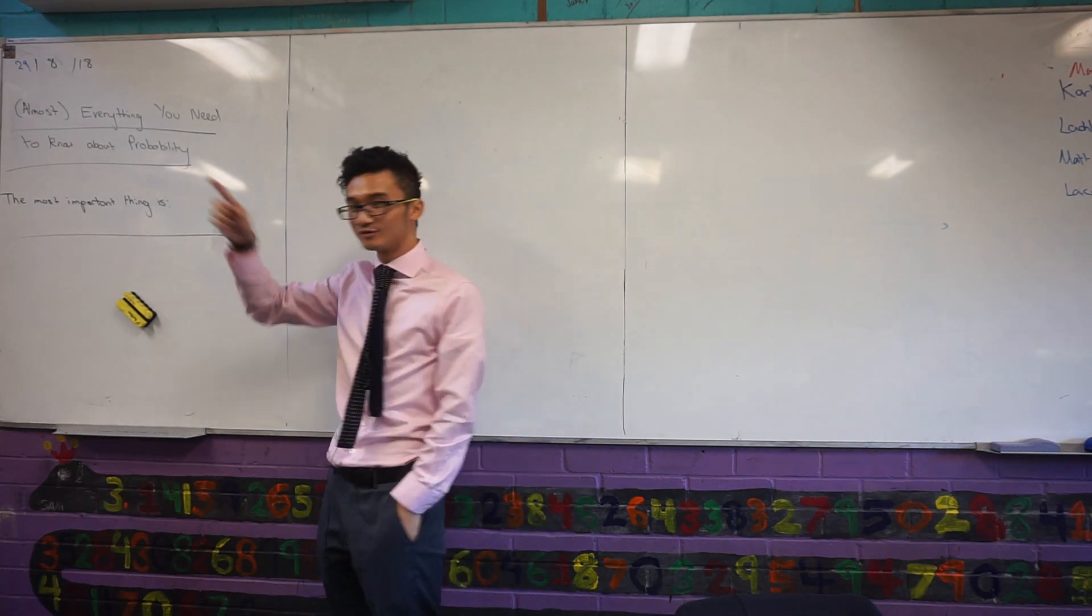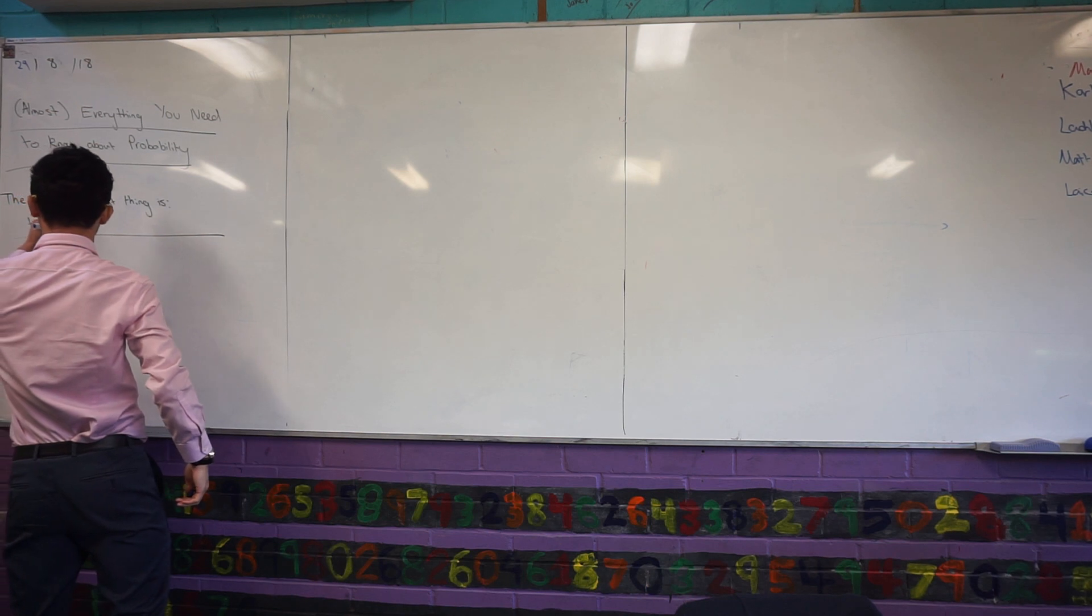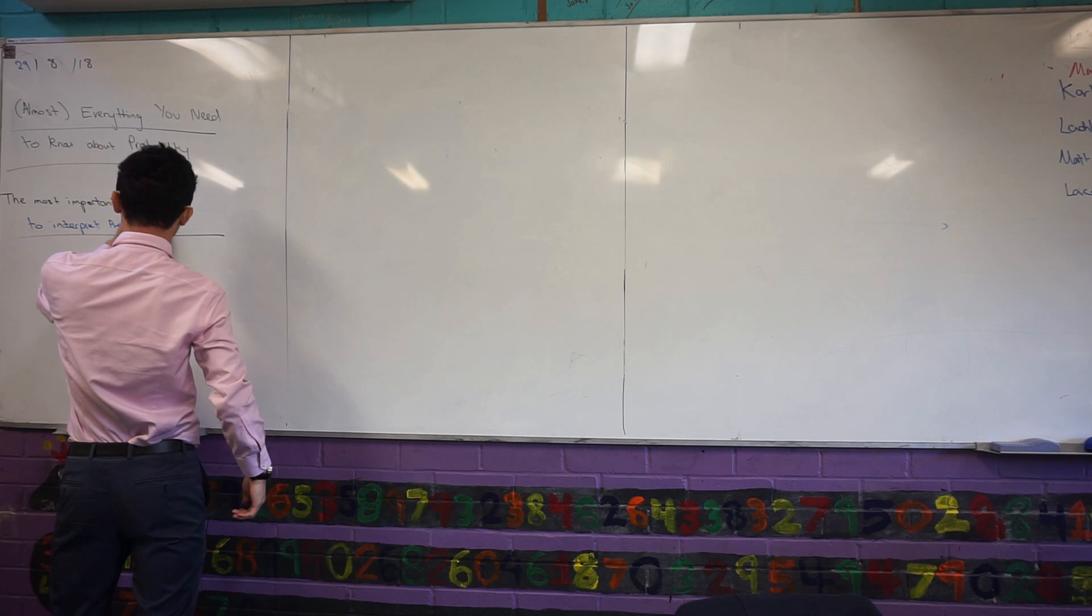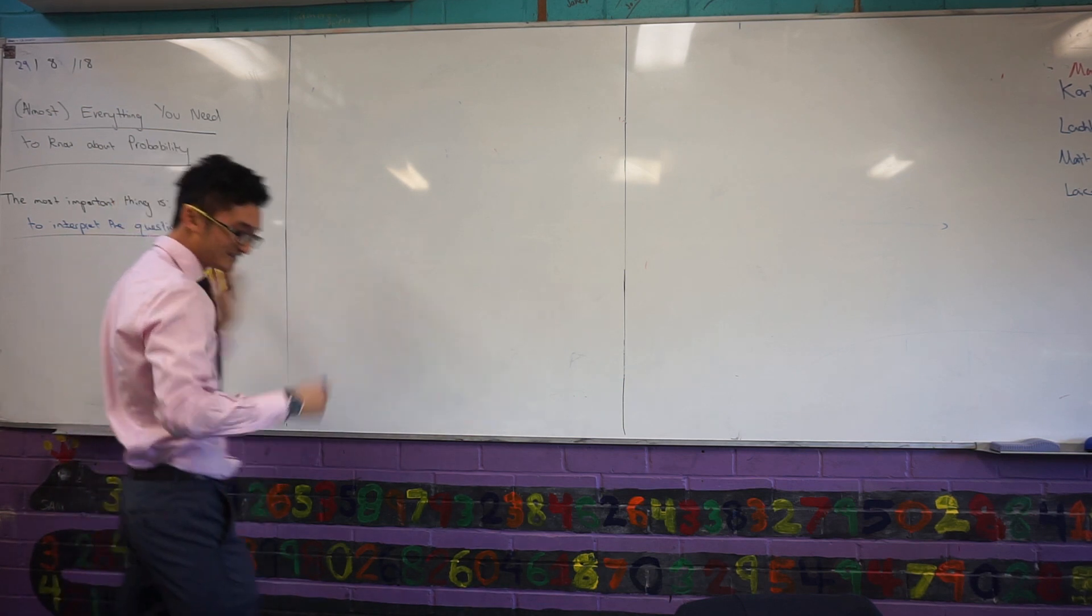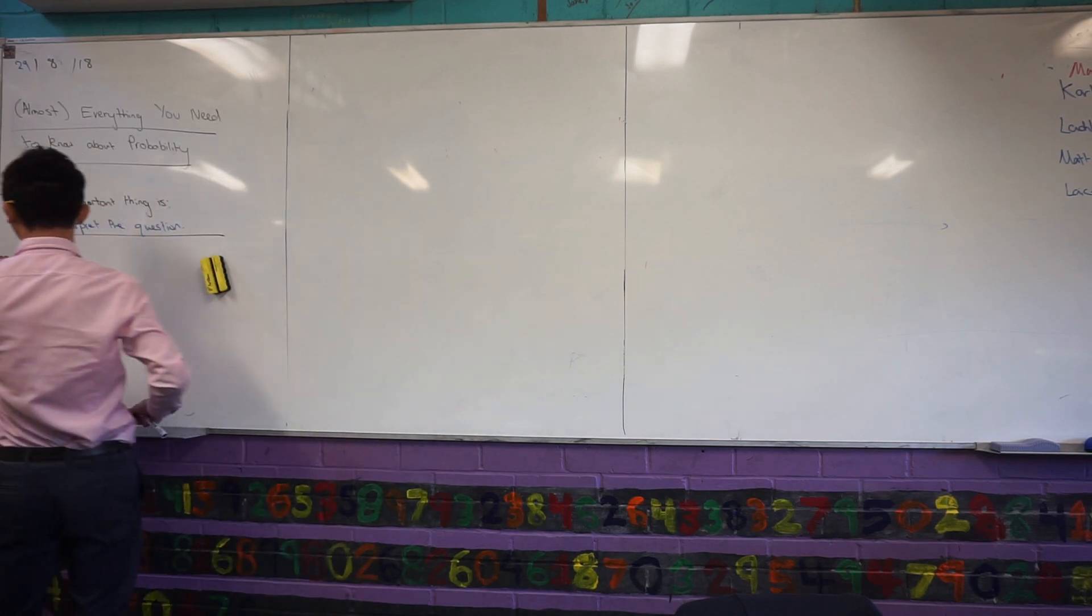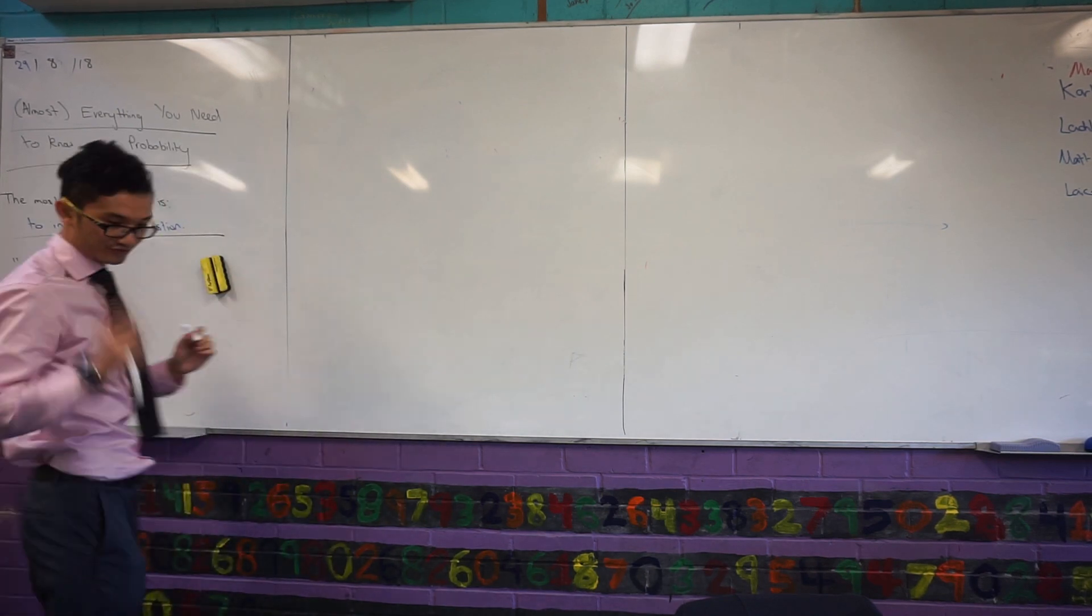So on that note, the most important thing in probability is to interpret the question. The most important thing is to interpret the question. In saying that, I will give you some quote-unquote rules on them. And I have three of them.